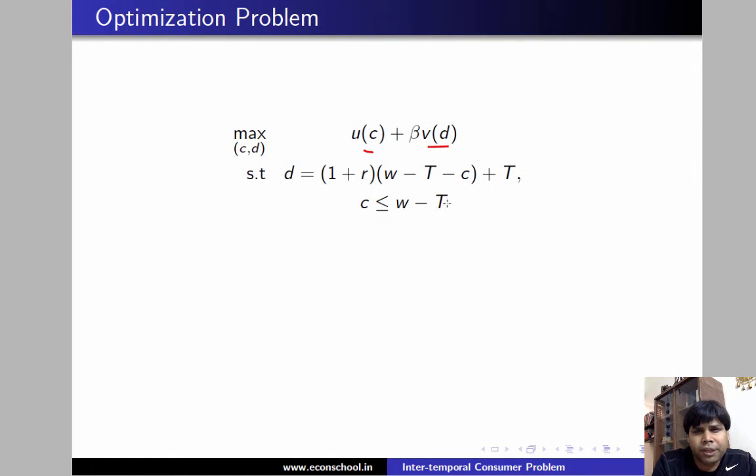So T is what government takes away from this particular consumer in period 1. So W minus T will be his leftover income in period 1. So C, the consumption in period 1, must not exceed W minus T.